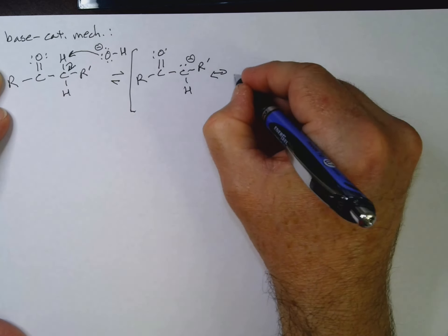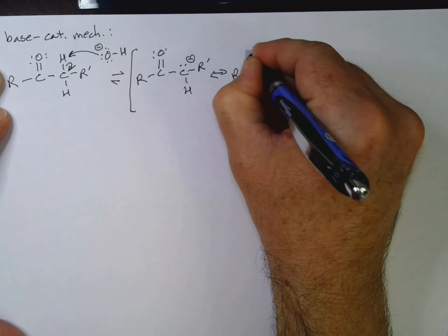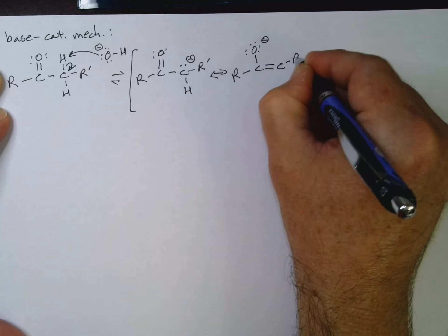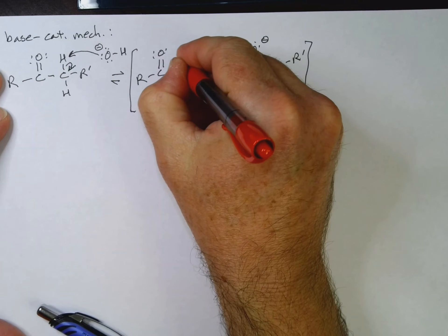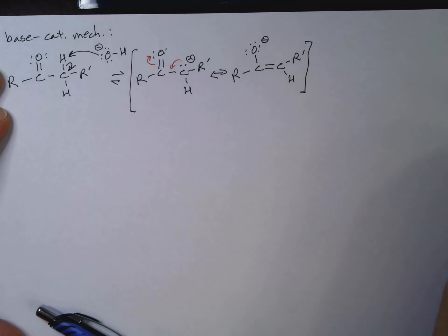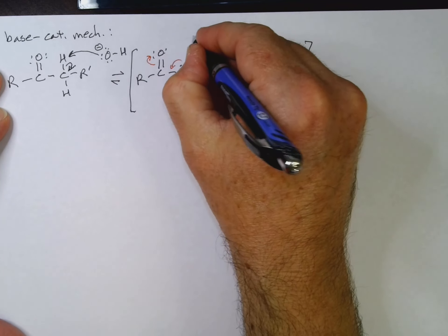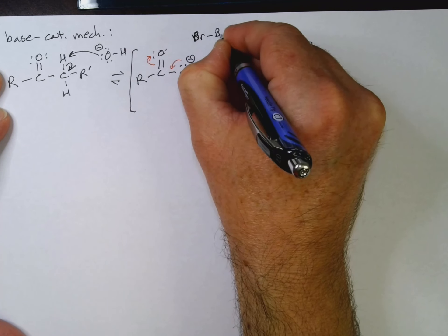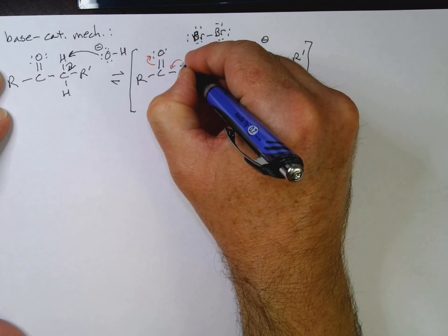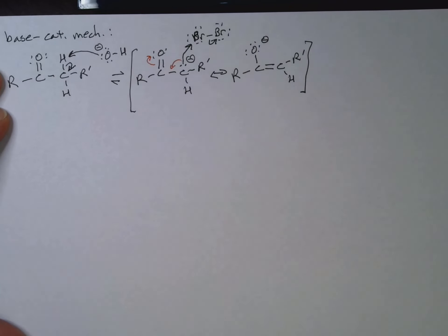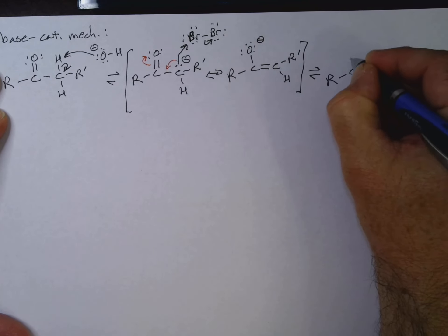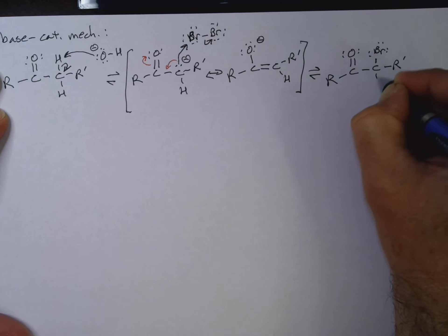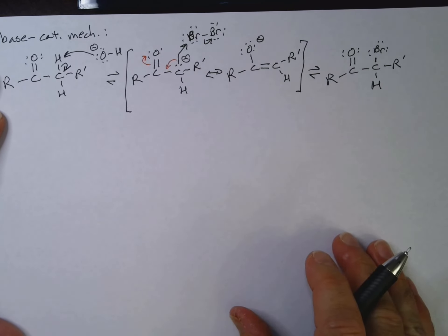Now, we do have our resonant structure. So I could, you know, in red here, show what's going on with my resonance structure. Or we could get our actual reaction, where I've got my Br2. And I simply have those electrons attacking the bromine and those ones go there to break that Br-Br bond. And now I've got my product. And there we go. There's our base catalyzed mechanism.